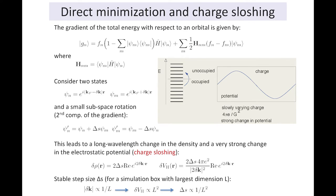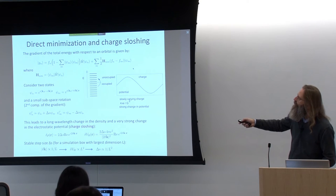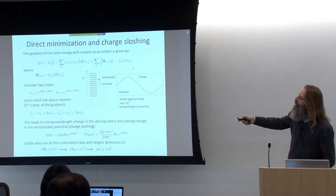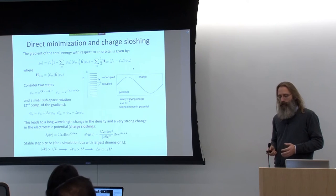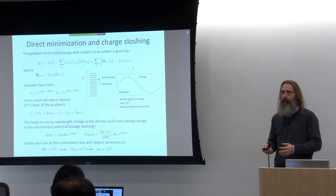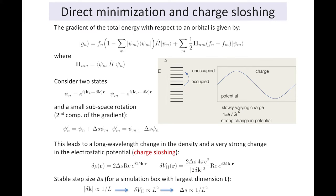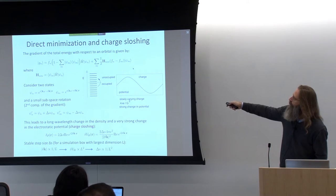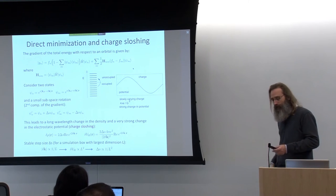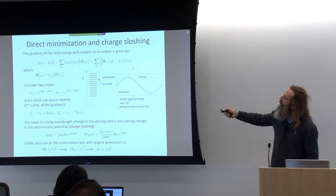The problem with this situation — especially with direct minimization — is called charge sloshing. The gradient can be decomposed into two parts: a part that lives in the subspace spanned by our current orbitals (the subspace rotational part), and a part pointing outside that space. It is the part of the gradient inside the subspace spanned by the orbitals that poses the problem in direct minimization.